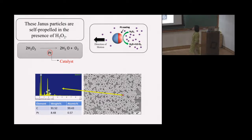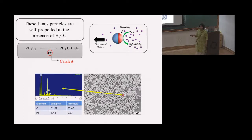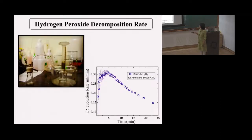To make sure it was all coated nicely, we used a method of elemental analysis called X-ray dispersive spectroscopy. We confirmed that there is indeed platinum coated on our particles.